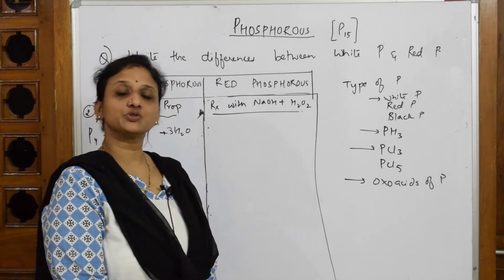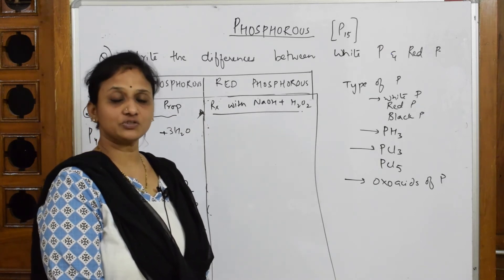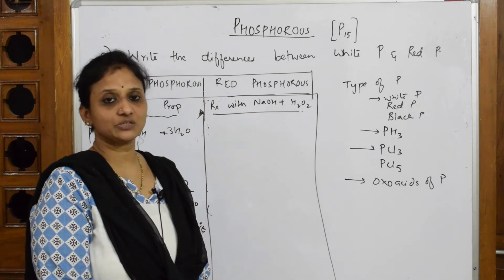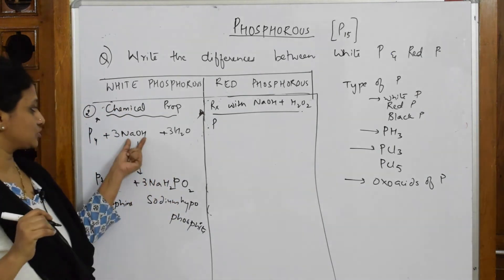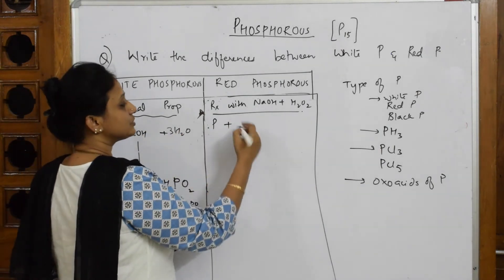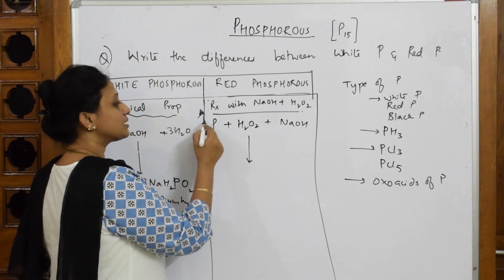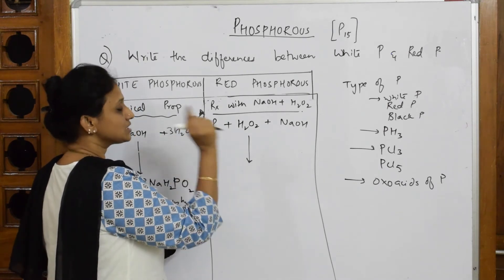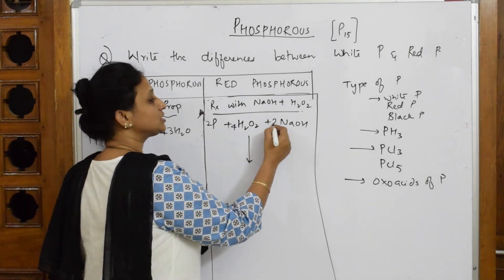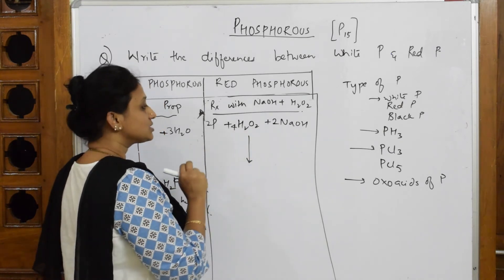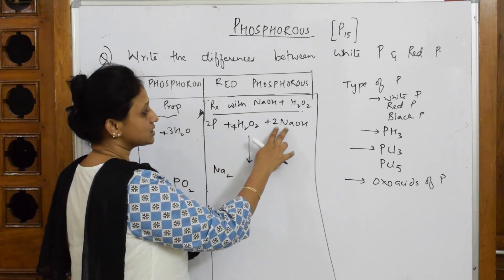Let's do the reaction of red phosphorus with hydrogen peroxide and NaOH. Take 2 moles of phosphorus, add 4 moles of hydrogen peroxide along with 2 moles of sodium hydroxide. The product formed contains Na₂, which is why we take 2 moles of sodium, and 2 phosphorus atoms — giving P₂ in the product.